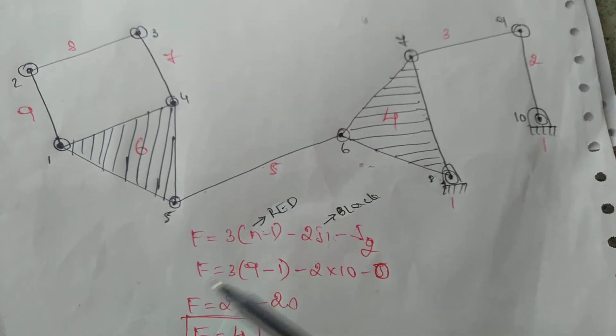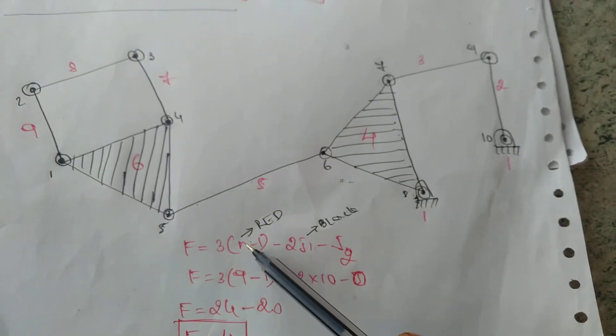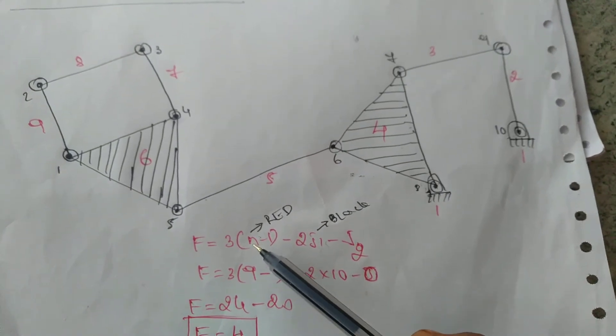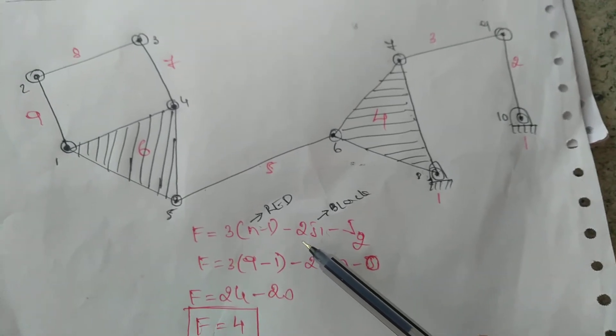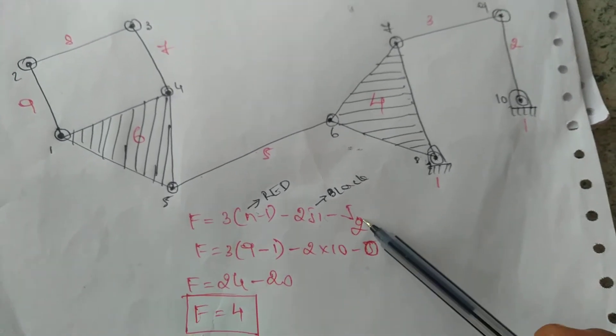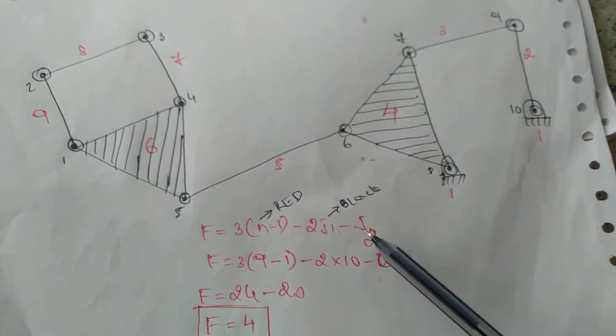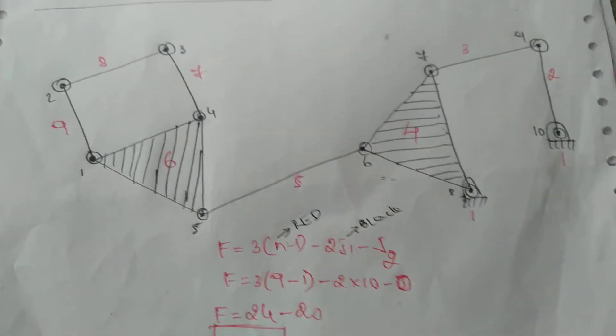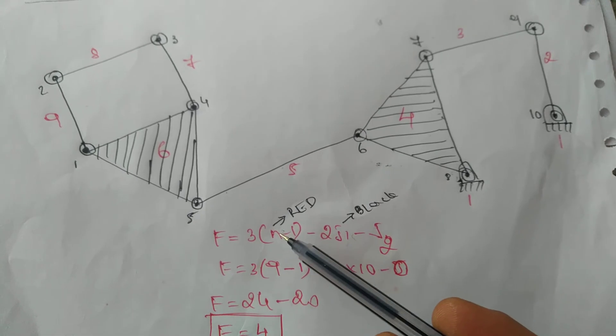Using Kuchbeck equation, n is the number of pairs, j1 is a binary joint with one degree of freedom, and j2 has two degrees of freedom. We'll look at n first, which is the number of pairs.